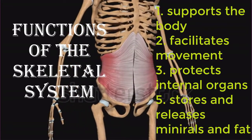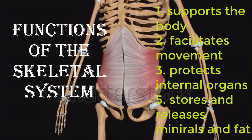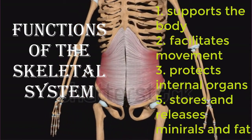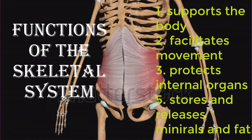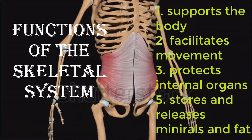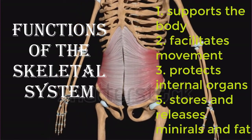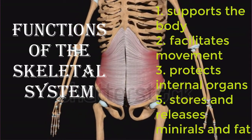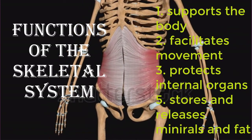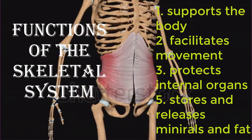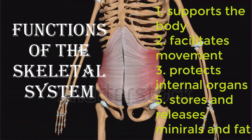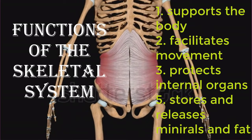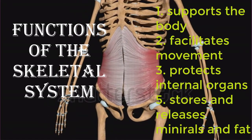On a metabolic level, bone tissue performs several critical functions. The bone matrix acts as a reservoir for a number of minerals important to the functioning of the body, especially calcium and potassium. These minerals are incorporated into bone tissue and can be released back into the bloodstream to maintain levels needed to support physiological processes. Calcium ions, for example, are essential for muscle contraction and for controlling the flow of other ions involved in the transmission of nerve impulses.